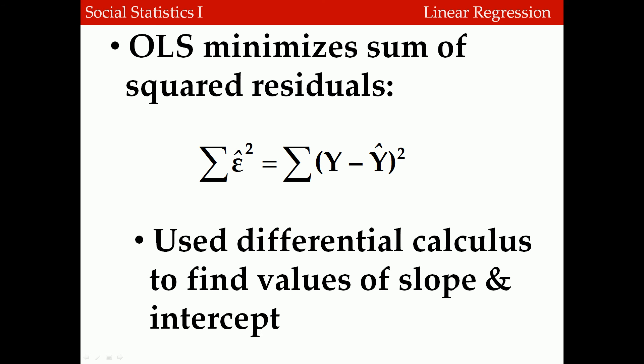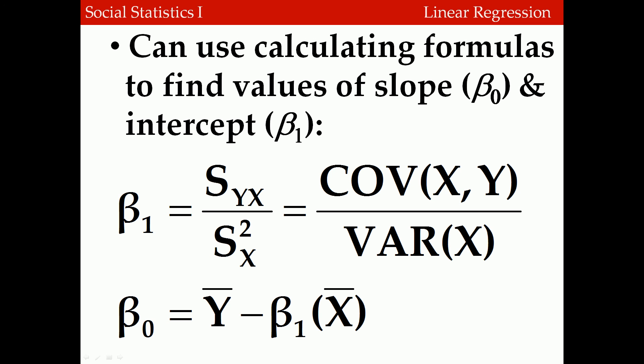The calculating formulas use variances, covariances, and mean values. The slope beta 1 equals the covariance of x and y divided by the variance of the independent variable x. Once we have the slope, the intercept beta 0 equals the mean of the dependent variable minus beta 1 times the mean of the independent variable. The regression line always passes through the point defined by the means of both variables.